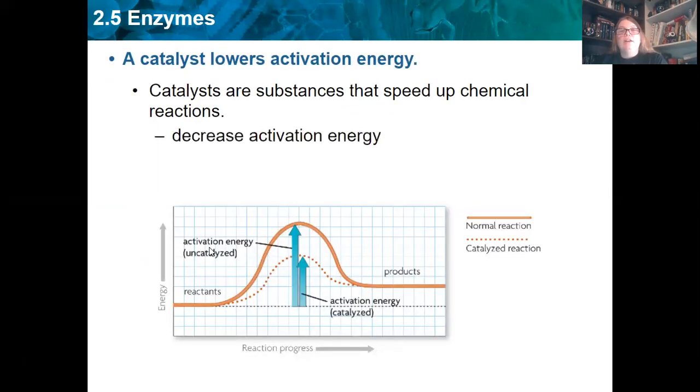So catalysts speed up chemical reactions by decreasing activation energy and increasing reaction rate. On your test, it's for sure going to ask you about the decrease in activation energy. So make a note of that if you're taking notes. Catalysts reduce or decrease activation energy. And since an enzyme is a catalyst, that's what it's going on.